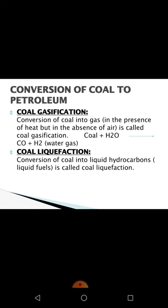How can we convert coal to petroleum? There are two processes. The first process is called coal gasification. The conversion of coal into gas is called coal gasification, and this conversion is done in the presence of heat but in the absence of air.